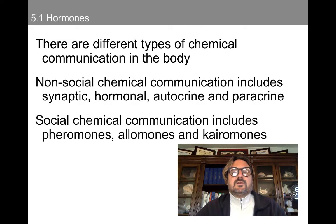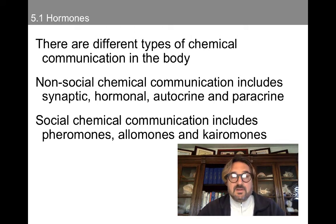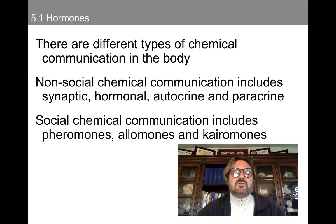There are different types of chemical communication in the body. I divide these into the non-social and the social chemical communication. The non-social includes synaptic, which we've talked about a great deal in my previous lectures. We also have the hormonal, which we're going to talk about. Then autocrine and paracrine, which we'll also talk about. And the social chemical communication includes pheromones, allomones, and kairomones.